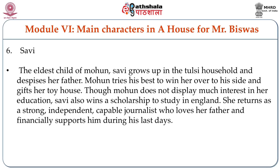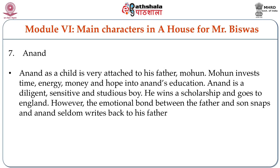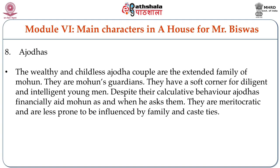Savi is the eldest child of Mohan. She grows up in the Tulsi household and despises her father. Mohan tries his best to win her over and gifts her a toy house. Though Mohan does not display much interest in her education, Savi wins a scholarship to study in England and returns as a strong, independent, and capable journalist who loves her father and financially supports him during his last days. Anand is a child very attached to his father Mohan. Mohan invests time, energy, money, and hope into Anand's education. Anand is diligent, sensitive, and studious, wins a scholarship and goes to England; however, the emotional bond between father and son snaps and Anand seldom writes back. The Ajodhas — a wealthy, childless couple — are the extended family and guardians of Mohan. Despite their calculative behaviour, they financially aid Mohan as and when he asks, and are meritocratic and less prone to be influenced by family and caste ties.